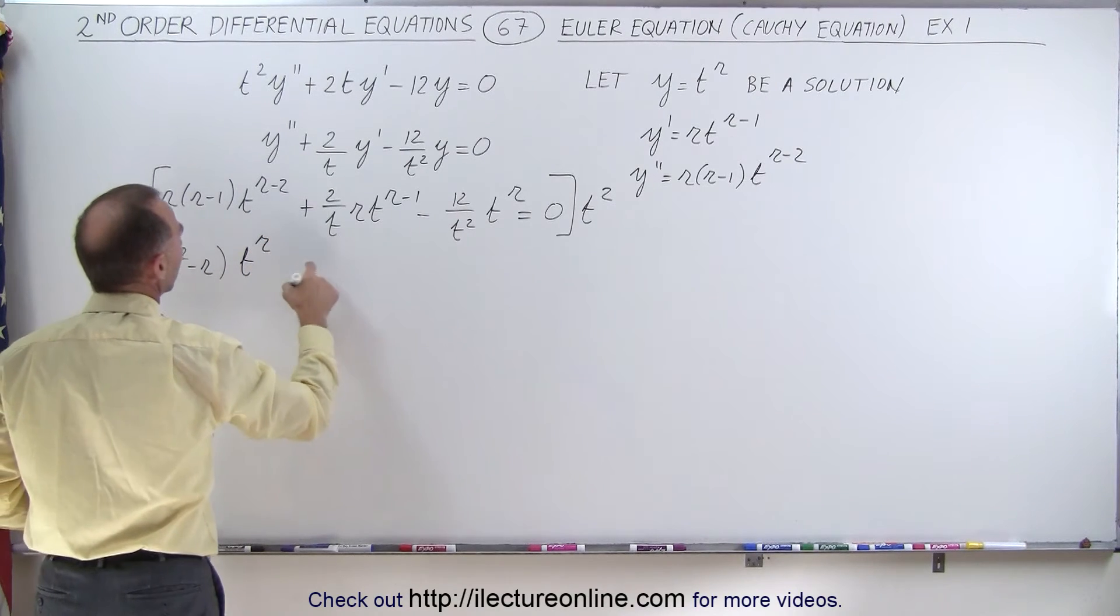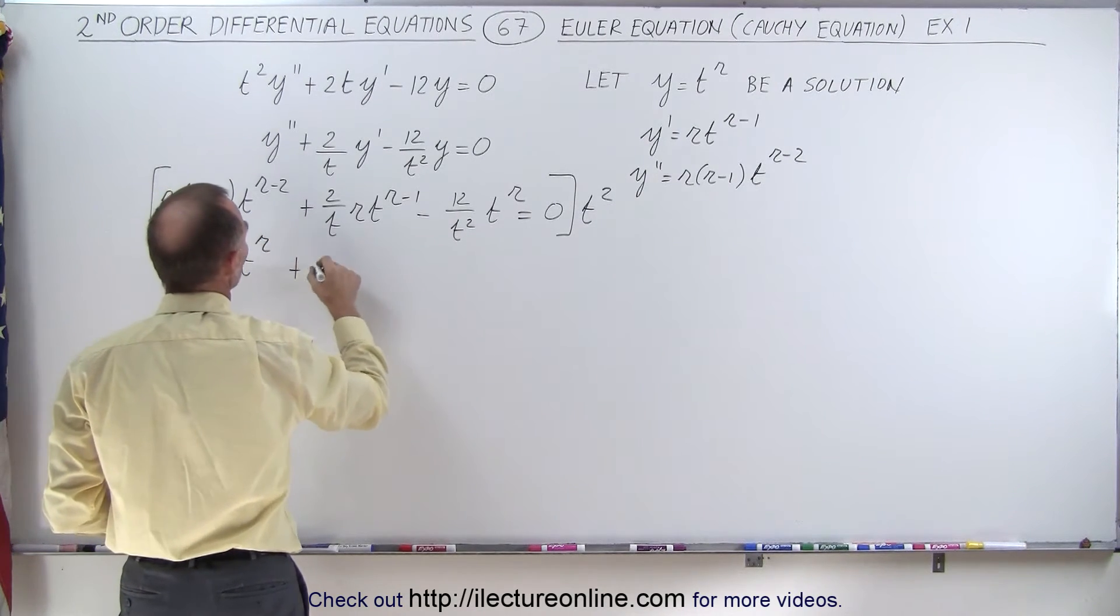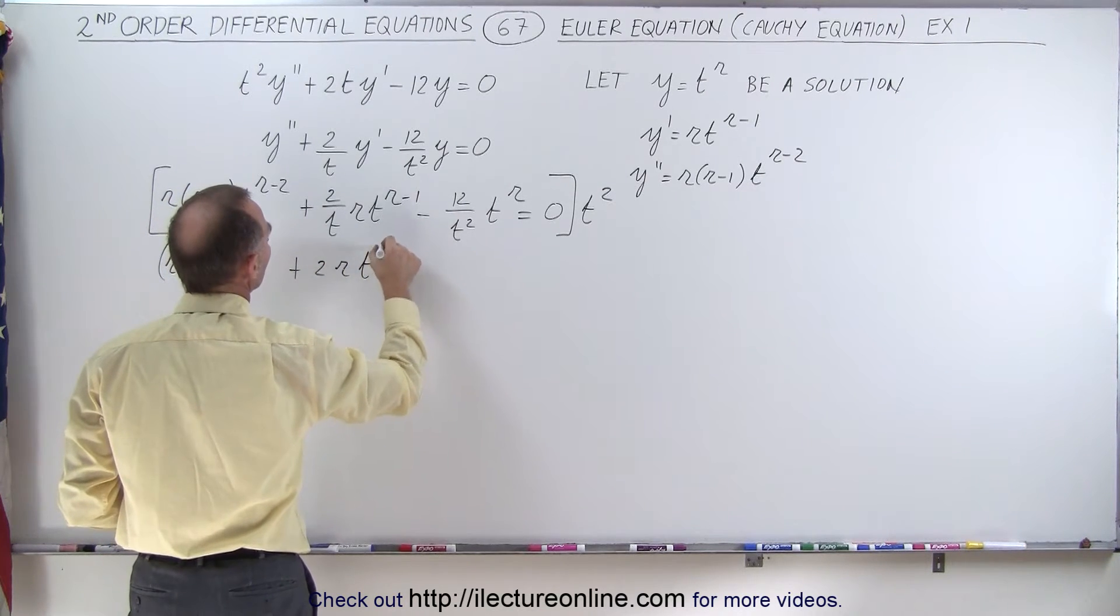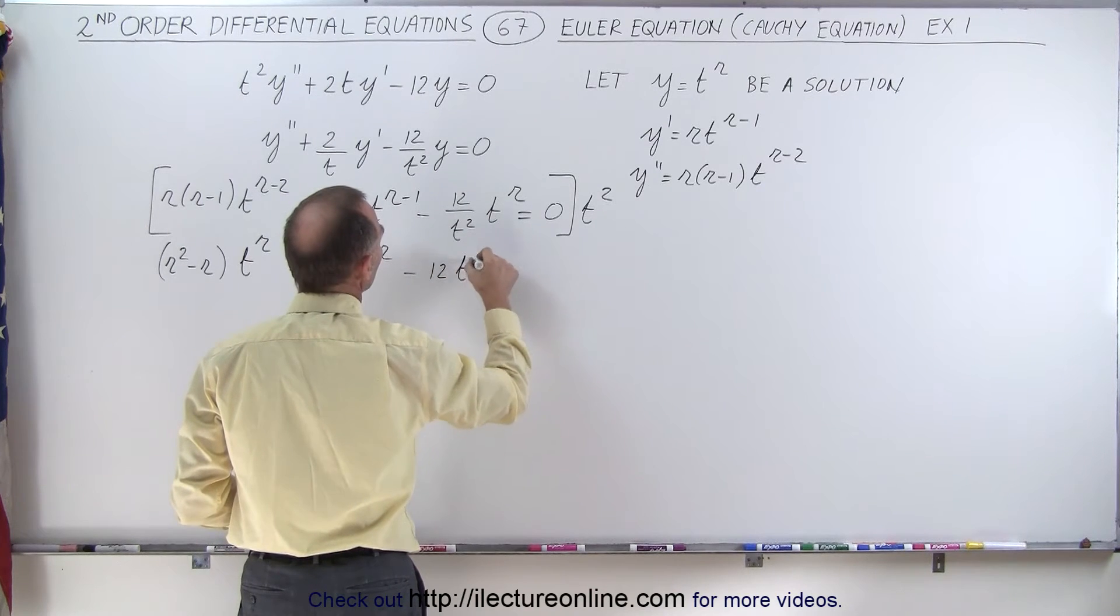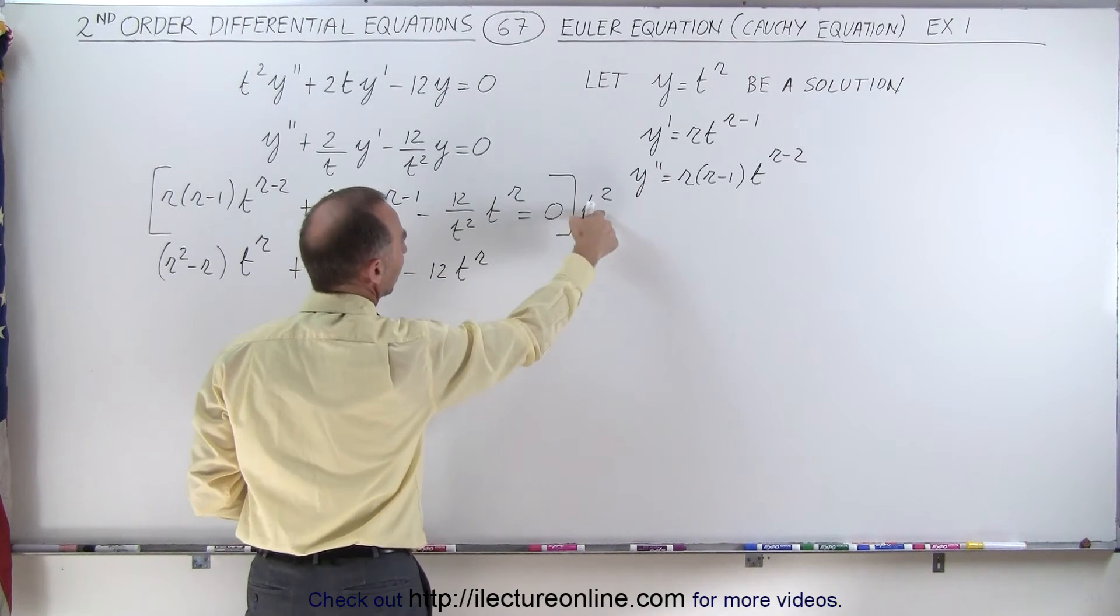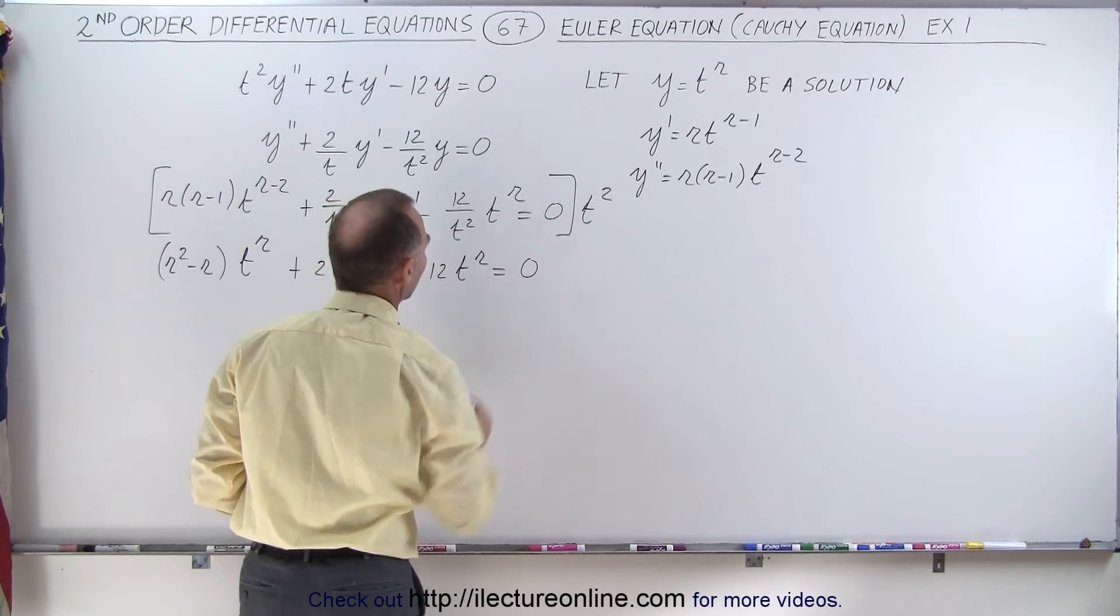And here this becomes plus 2r times t to the r power, and this becomes minus 12t to the r power, because this t squared will cancel out that t squared, and that equals zero.